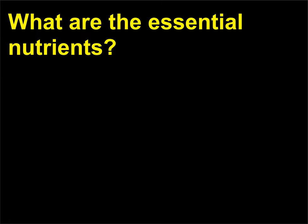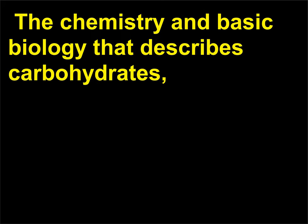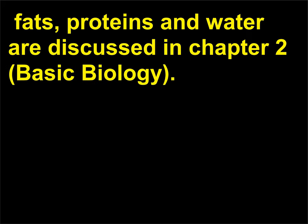What are the essential nutrients? There are six essential nutrients: carbohydrates, fats, proteins, water, vitamins, and minerals. The chemistry and basic biology that describes carbohydrates, fats, proteins, and water are discussed in Chapter 2, Basic Biology.